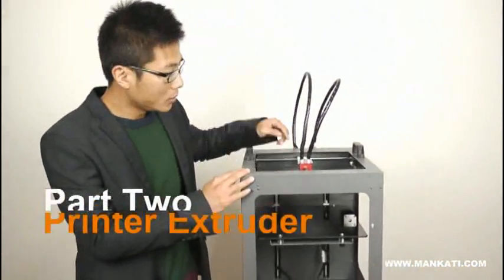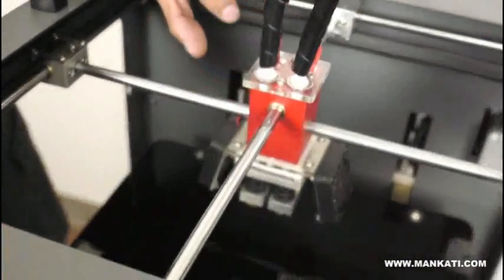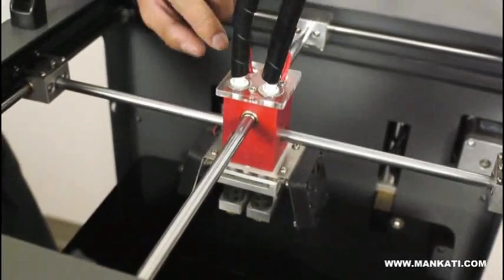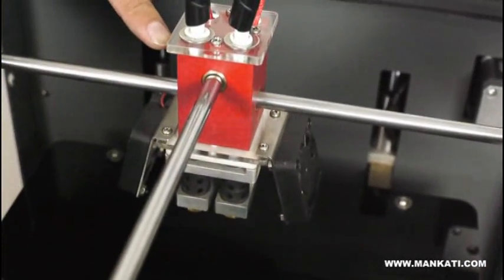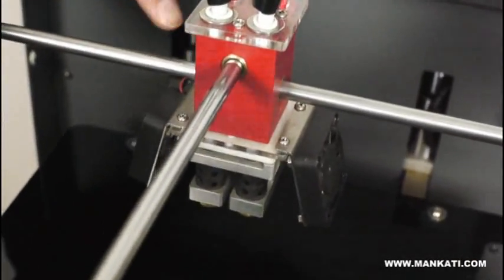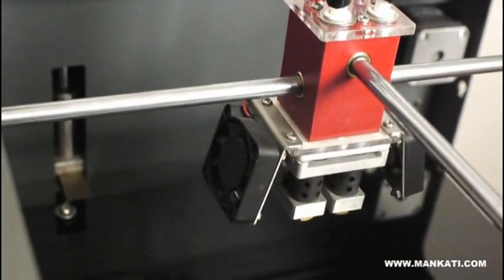And here, check the extruder piece. We also call it the print head. This is our patented design. This red part is made of special material, not simple plastic. It is PUM, high strength and high wear resistance. It can ensure long service life.